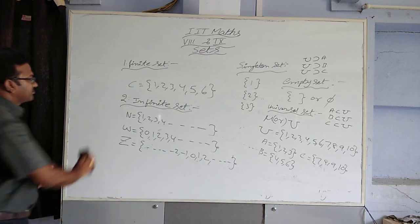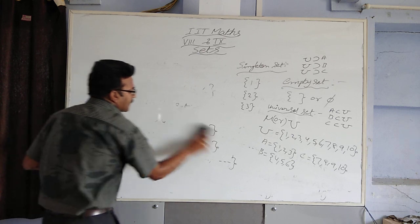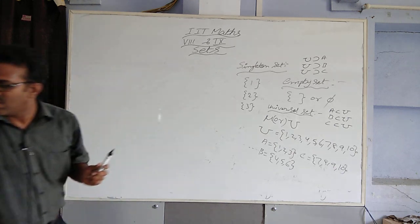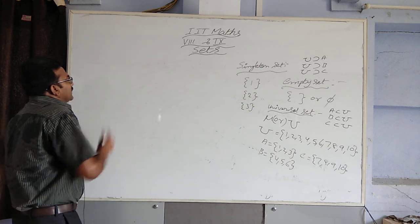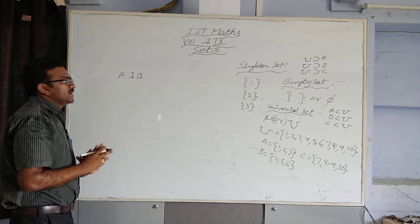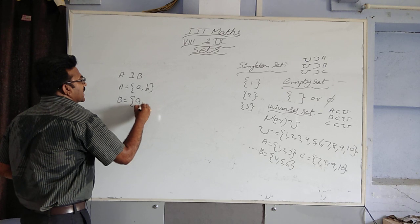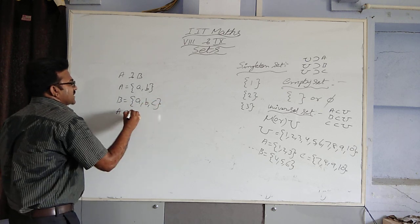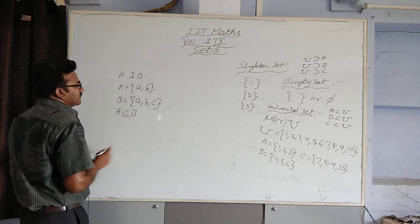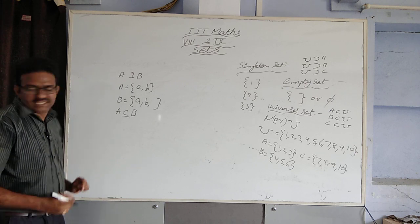Next, we are going to discuss about subsets. What is meant by subsets? If A and B are any two non-empty sets, and all elements in A are also contained in B, then A is a subset of B. For example, A = {a, b}, B = {a, b, c}. Then A is a subset of B because all elements in A are contained in B. Sometimes we use 'equal to' when both sets contain the same elements — those are called equal sets.